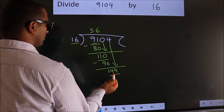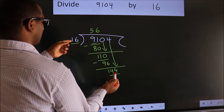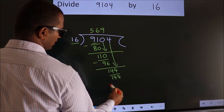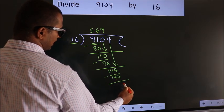When do we get 144? In the 16 table. 16 nines, 144. Now, we subtract. We get 0.